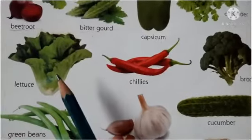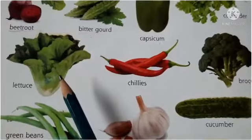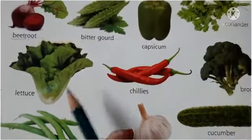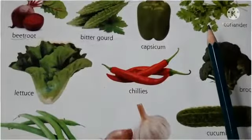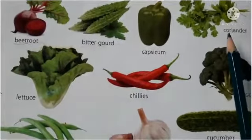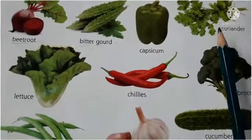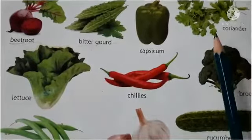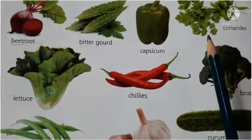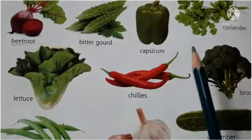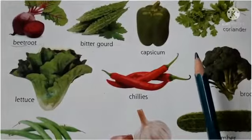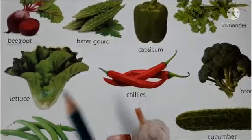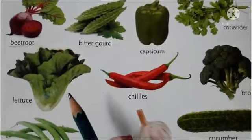Here you can see some leaves like lettuce and coriander — what do we call these? Leafy vegetables, because we use their leaves. Like we use spinach — Palak — we use its leaves, its pati. So they are called leafy vegetables.